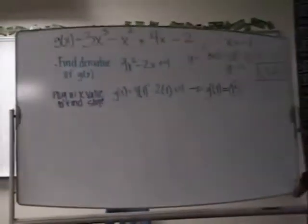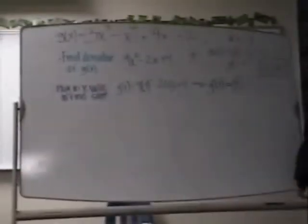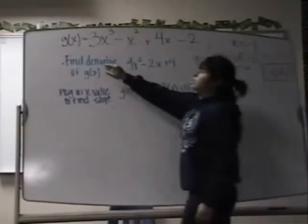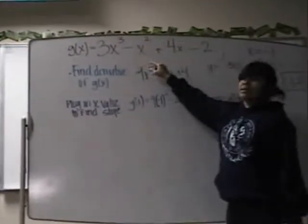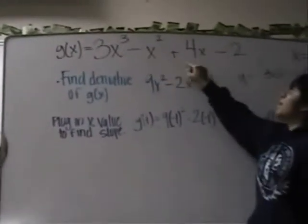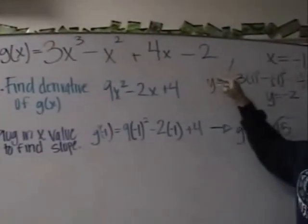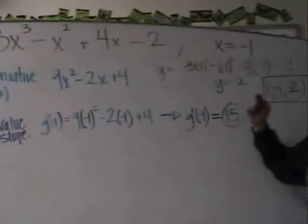Here I'm going to show you one problem on how to find the equation of a normal and a tangent line. So first, here's my equation: g of x equals 3x cubed minus x squared plus 4x minus 2, at x equals 1.